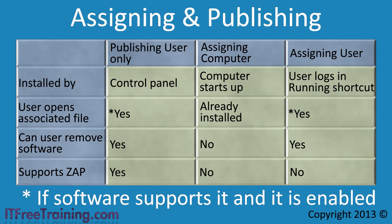The second choice when deploying software is assigning. Unlike publishing software, assigning can be done for both the user and the computer. When software is assigned to the computer, it is automatically installed on the computer when the computer starts up. This means that any user who logs into that computer will have that software available to them.